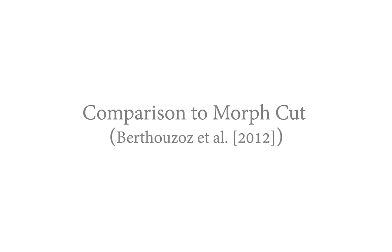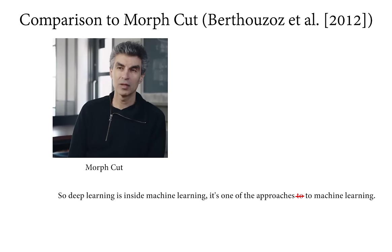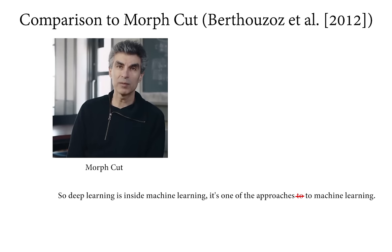MorphCut is a video transition tool in Premiere Pro for removing jump cuts, based on the work of Bertussault et al. In our setting, MorphCut produces artifacts, as it requires the transition to be in a relatively static part of the video.